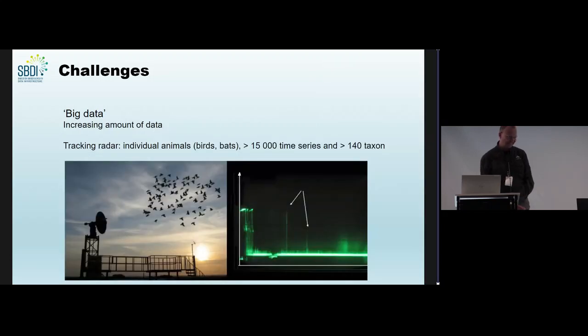Which ends us up with almost a billion data records per animal and year. To make things worse, we also use tracking radar to track individual birds and bats. And this can give us in a very short time period more than 50,000 time series for more than 140 taxa.